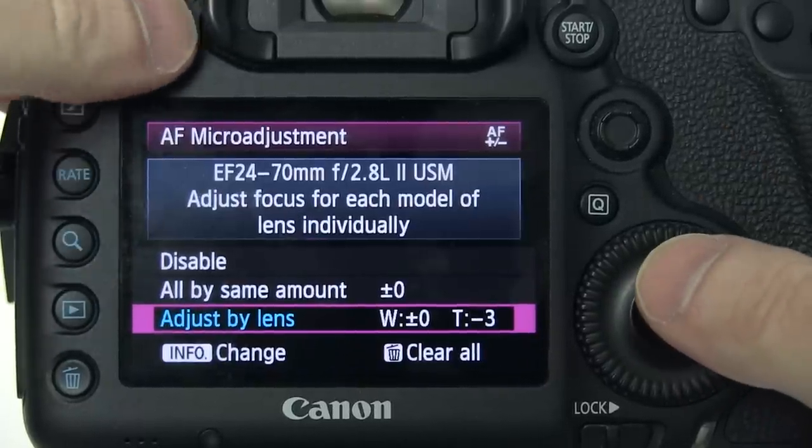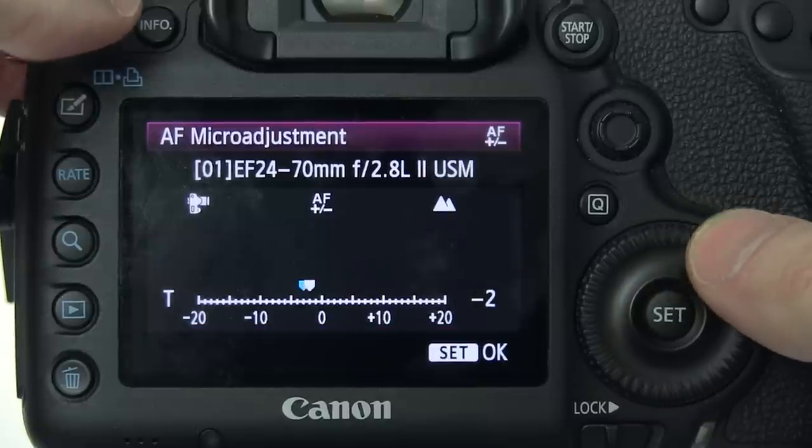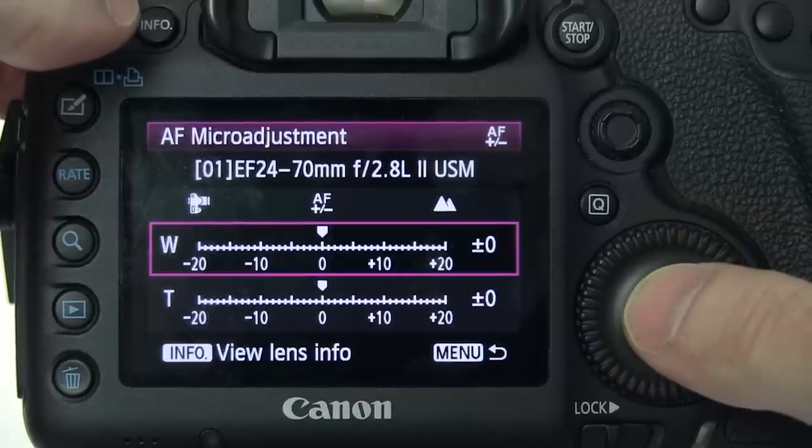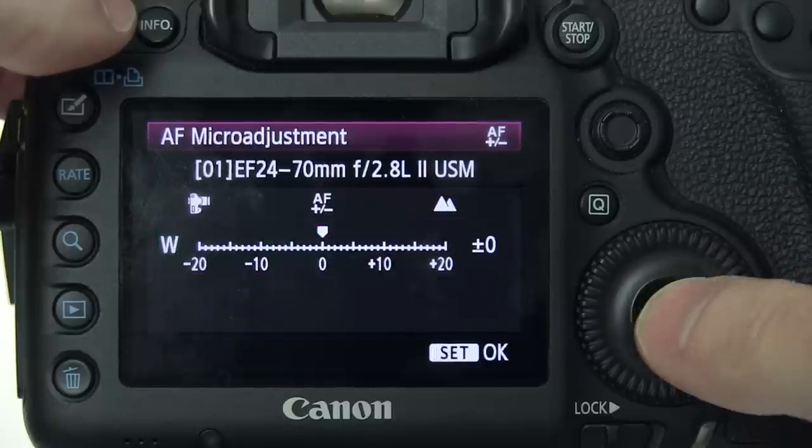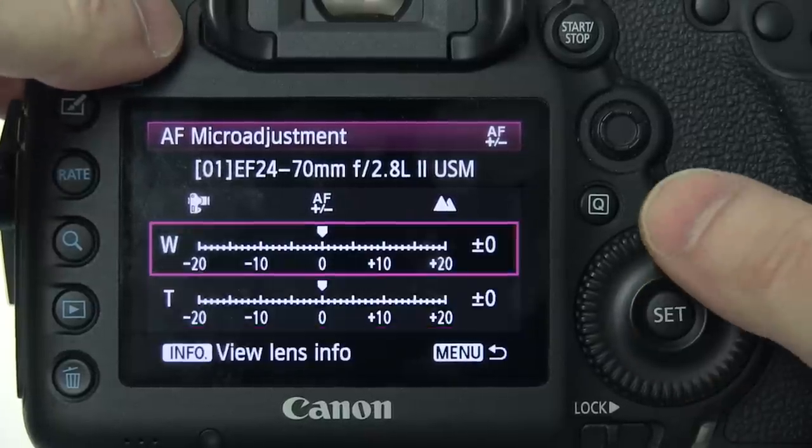Now on the Canon 5D Mark III, you can adjust the telephoto end of a zoom lens as well as the wide angle of the lens. So let's say, for example, that you're using a 24 to 70 millimeter lens. You would go to 24, set your camera at about two feet, take a shot of the target, and then make your micro adjust adjustment.